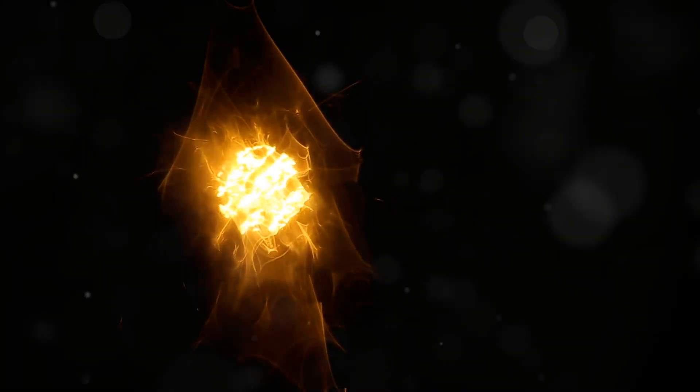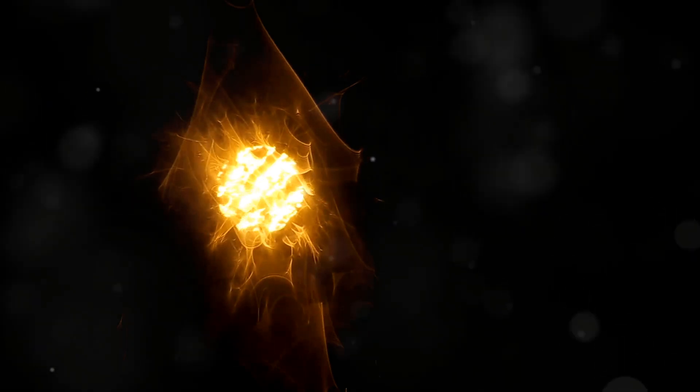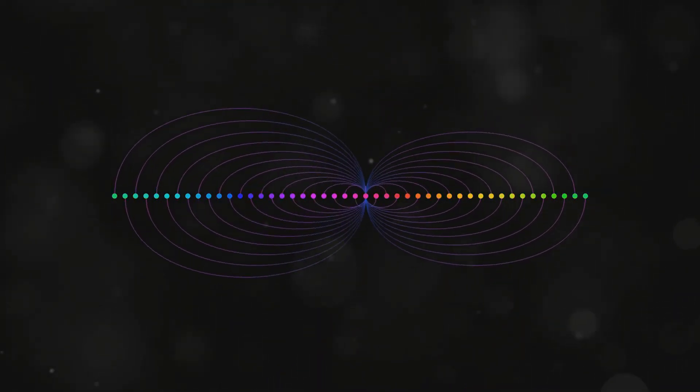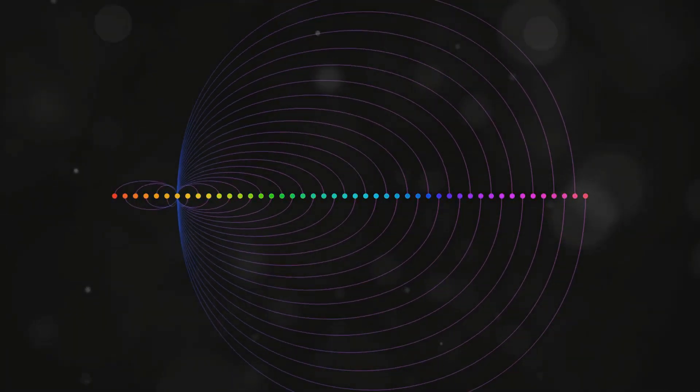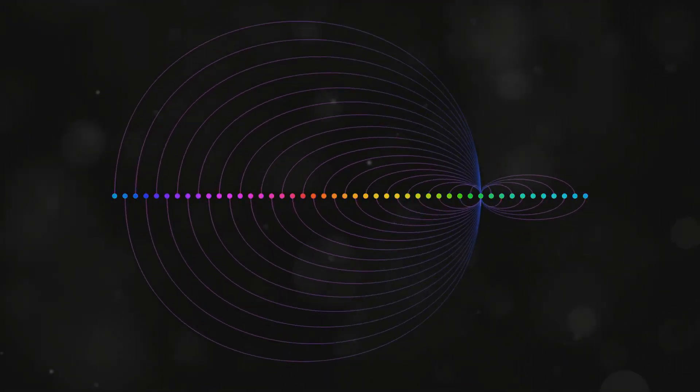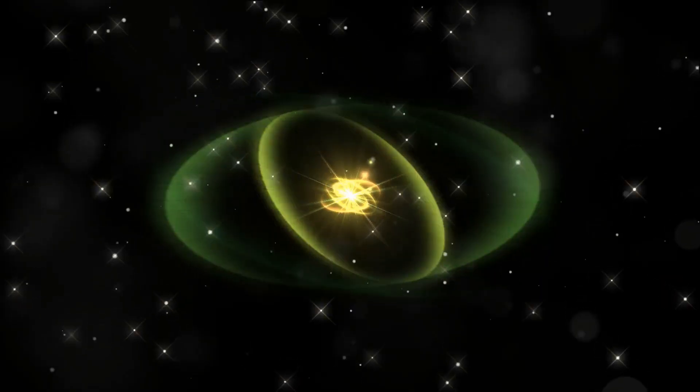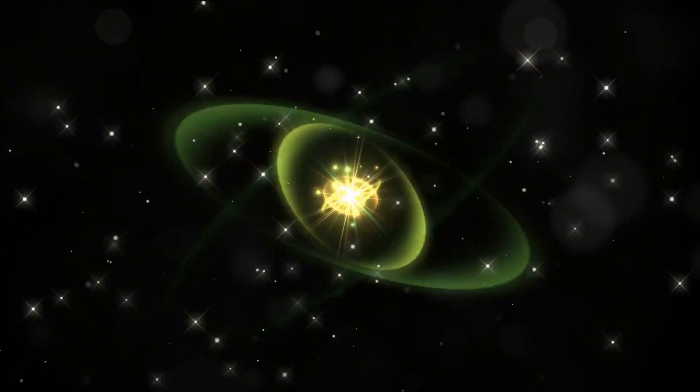Imagine a single gamma ray photon. It's like a tiny bullet of energy. Now imagine a million visible light photons combined. They still can't match the energy of that single gamma ray photon. The gamma ray still wins hands down.